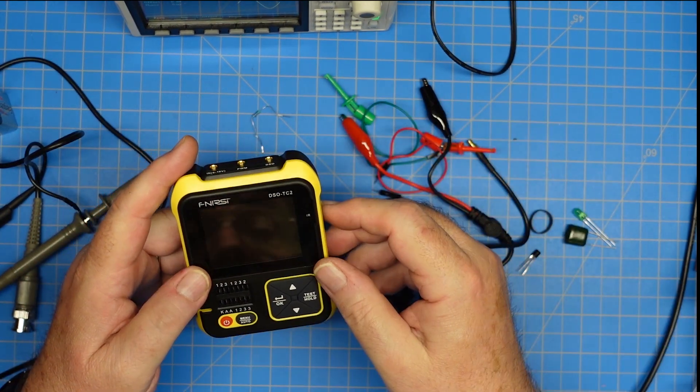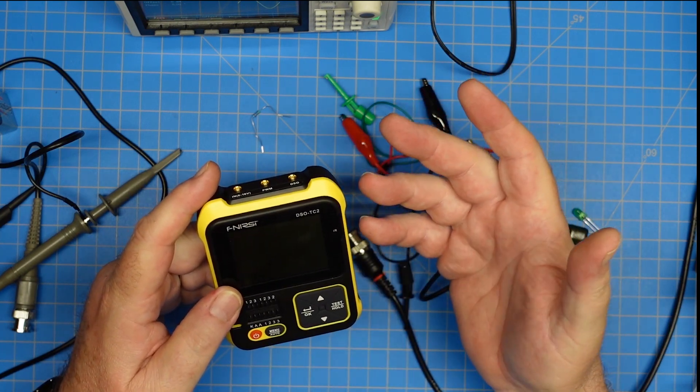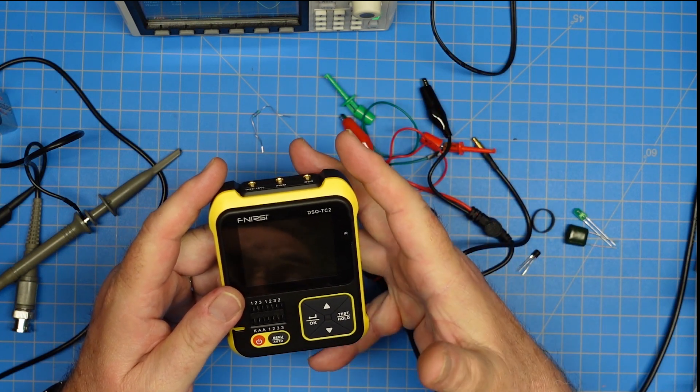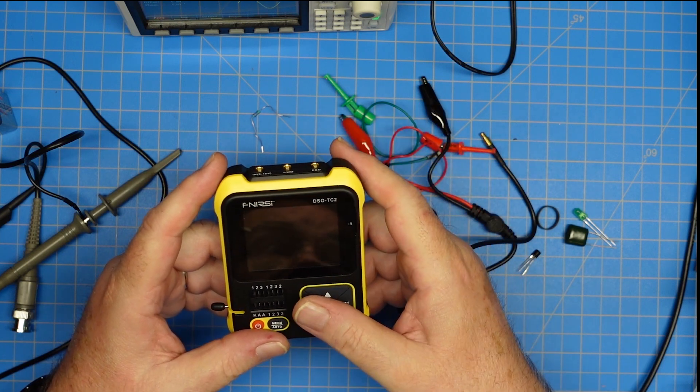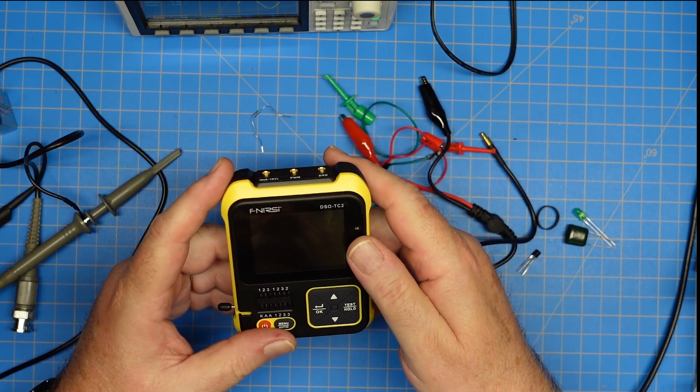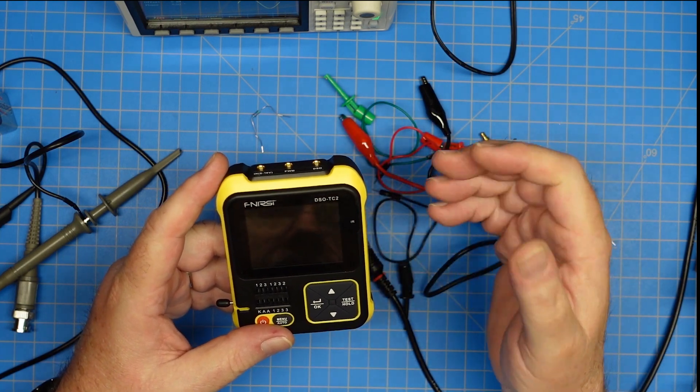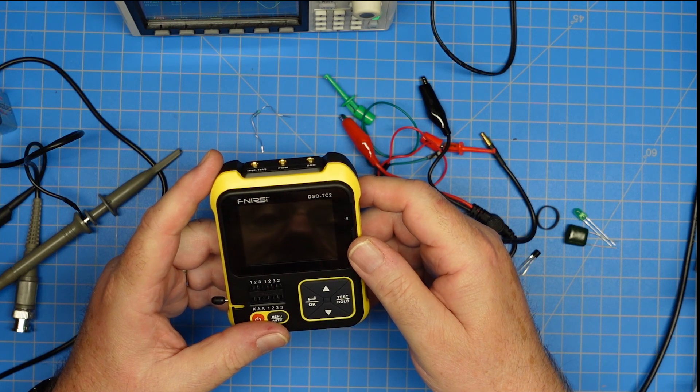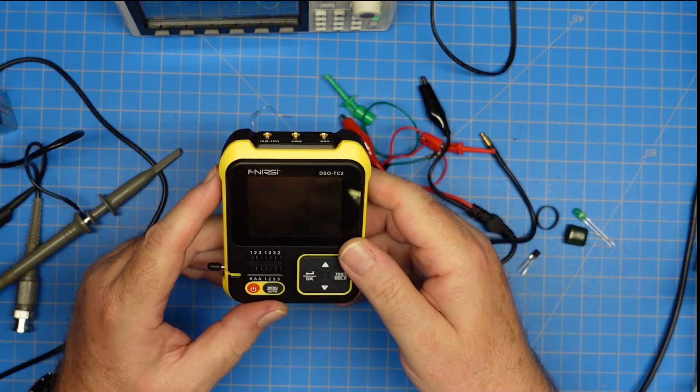But for what it costs, I think it provides some value. Now, keep in mind that for about $120, you can get a 70 megahertz O1 handheld oscilloscope that's about twice this size. That is an oscilloscope and a signal generator. It has a bigger screen and more functionality. $50, $120. Depends on where you want to get into it at. But if you're just scope curious, this may be the thing that you want to get.